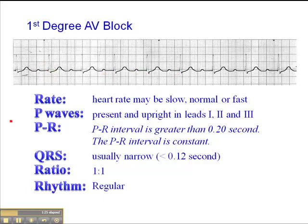First degree AV block is benign. You'll see this sometimes in patients — nothing to be alarmed about. The only time you need to be concerned is if the patient is bradycardic or tachycardic. What is important is if you're monitoring a patient who had a normal PR interval and you notice suddenly that their PR interval began to change right before your eyes — that would be serious. But if you find them already in a first degree AV block, it's benign, nothing to be concerned about. We simply document it, perhaps report it to the triage, and we don't go beyond that.